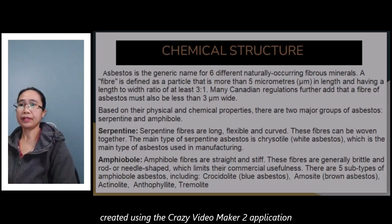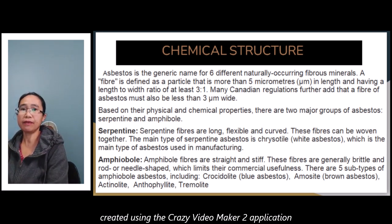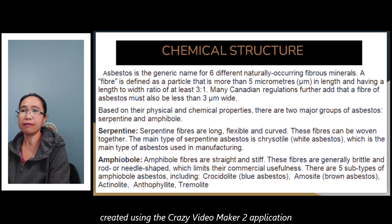Chemical structure: asbestos is a generic name for six different naturally occurring fibrous minerals. A fiber is defined as a particle that is more than five micrometers in length and having a length-to-width ratio of at least three to one.